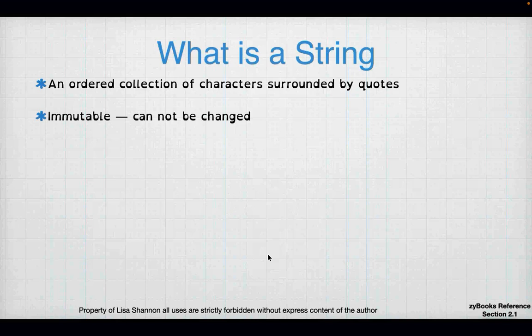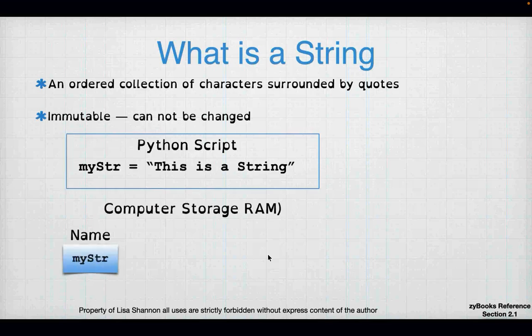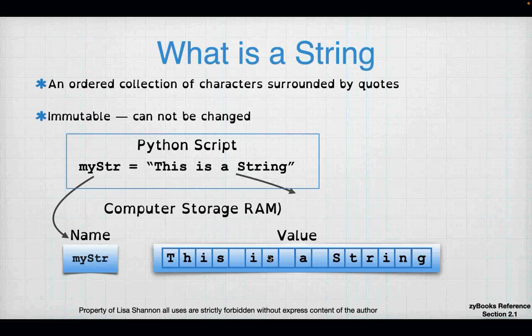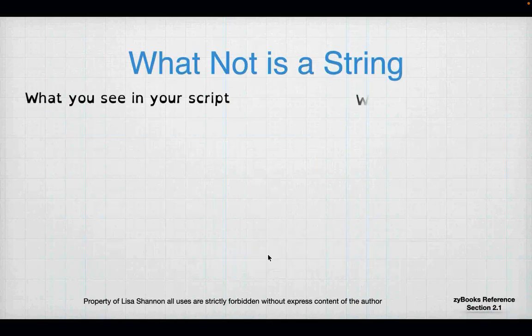What is a string? A string is an ordered collection of characters surrounded by quotes. Most importantly, a string is immutable — immutable means you're not allowed to change it. You cannot change a string. You can have Python create a new string from an old string with changes in it, but you cannot modify a string, period. Just like last week when we were talking about variables and RAM, a string is just a place in RAM with some number of characters in order.